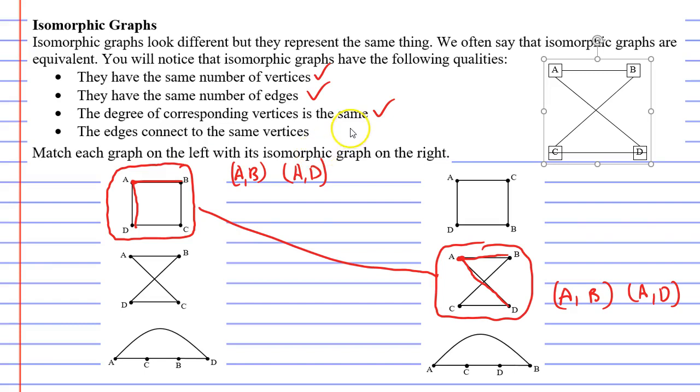So we're really only looking at the last dot point to check whether they are isomorphic. Okay, so if we look at the diagram on the left here in the middle, vertex A connects with vertex B. We'll write that down. And vertex A also connects with vertex C. So we're looking for a diagram on the right that has those same properties.